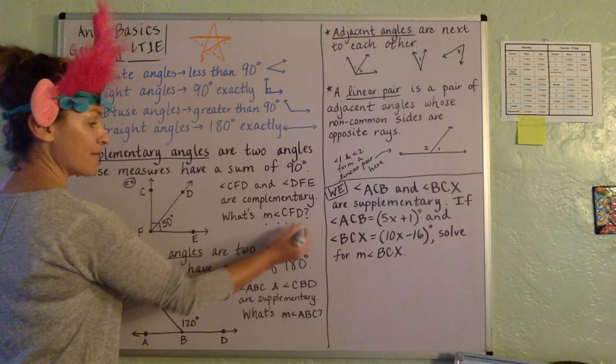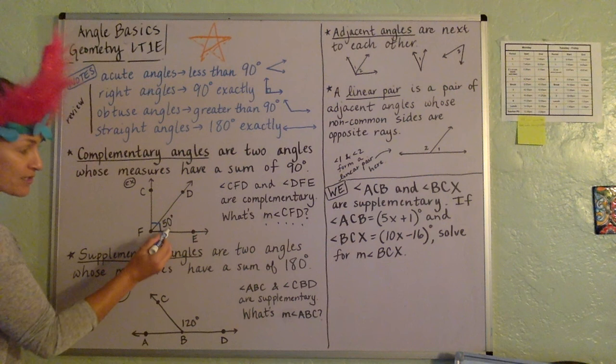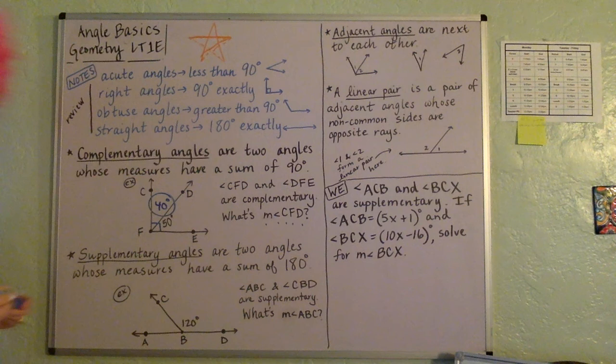CFD. So if together they make 90 degrees, and we know for sure because it's labeled in the diagram that this one is 50, well then that means that CFD has got to be 40 degrees.